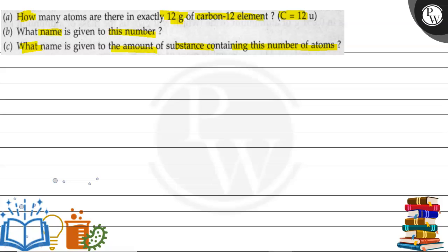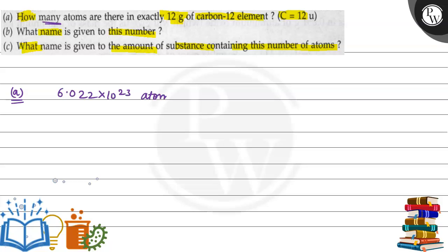The first part is: how many atoms are there in exactly 12 grams of carbon-12 element? The answer for the first one is there are basically 6.022 into 10 to the power 23 atoms present in 12 grams of carbon-12 element. So this is the answer to the first one — 6.022 into 10 to the power 23 atoms.